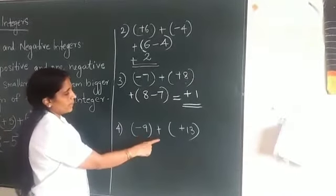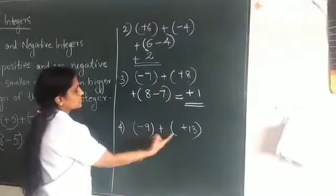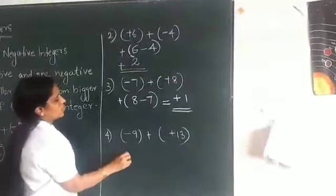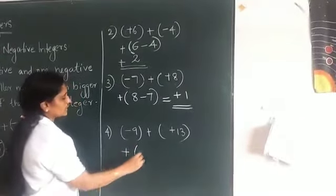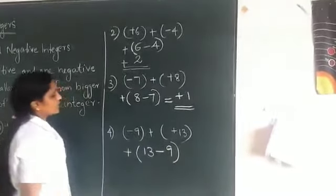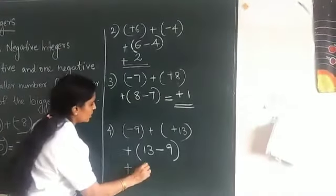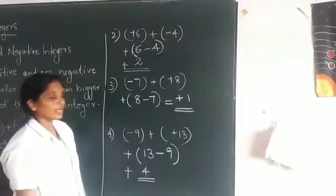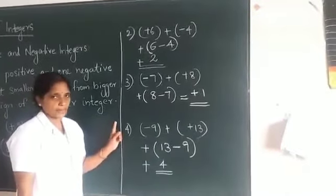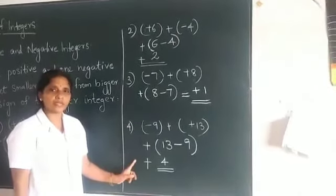Next: negative 9 plus positive 13. Observe these two numbers. The bigger number's symbol is plus. Within brackets, the operation is subtraction: 13 minus 9 equals 4. So the answer is positive 4. Children, this is the way you must do the addition of integers.